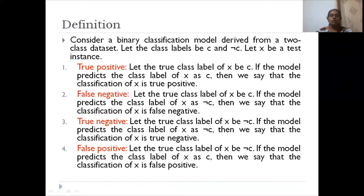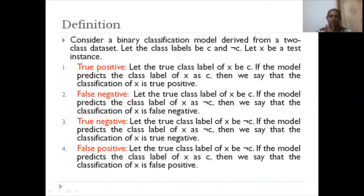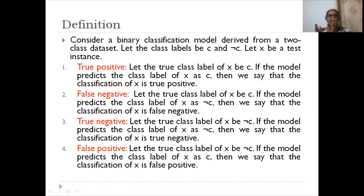What is a true positive? If a particular training or testing data set which is actually positive has also been predicted as positive by the classification model, then it is a true positive. If what is actually true has been classified as negative, that means we have a false negative — the classification is negative but it is false.